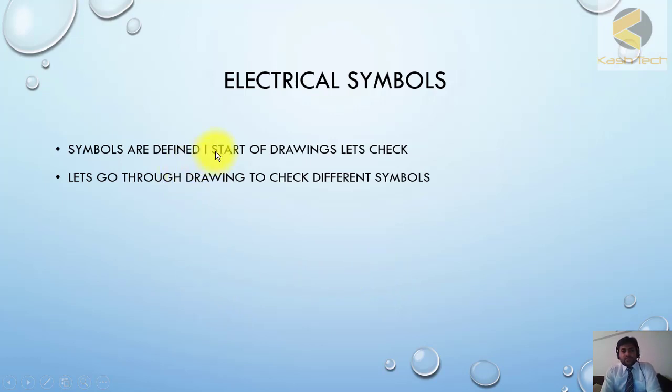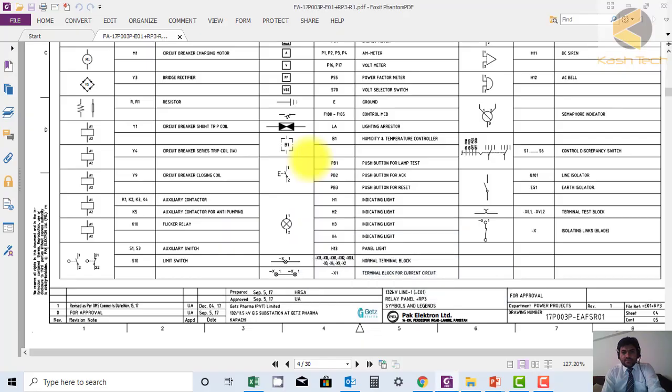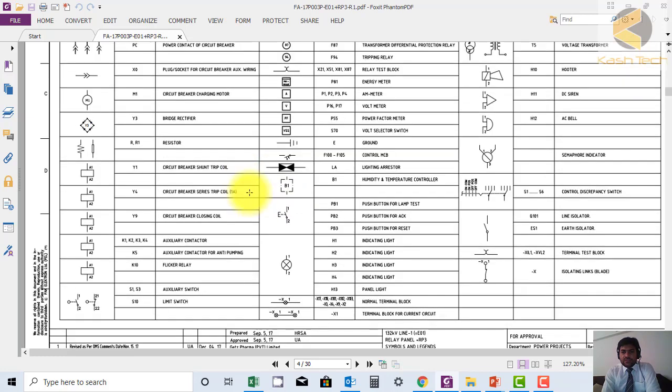Now I will show you the symbols in the drawing. This is the symbol and legend list which is available at the start of the drawing.